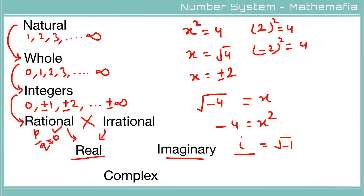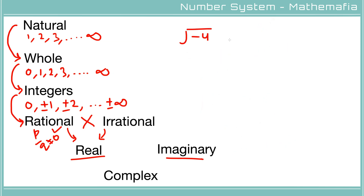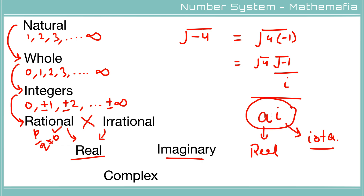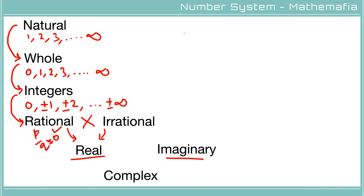We define a number called iota (i) whose value is √(−1). So √(−4) can be written as √(4 × −1) = √4 × √(−1) = 2i. This is of the form ai, where a is a real number and i is iota — this is an imaginary number, provided a is not zero. If a is zero, the result is zero, which is a real number. To reiterate: iota is √(−1), which means i² = −1.